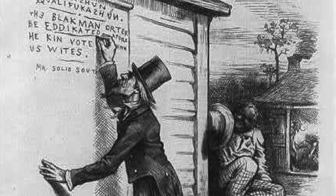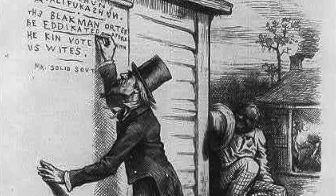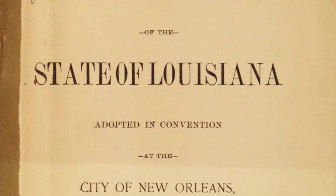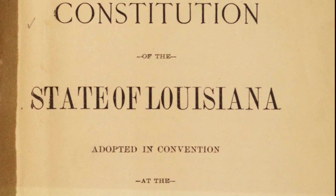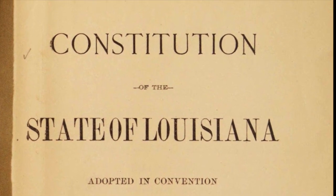Grandfather clauses were statutes enacted in southern states to prevent African Americans from voting. The first clause was passed in the Louisiana State Constitution in 1898.